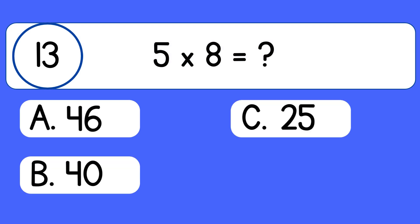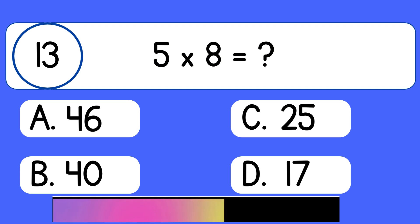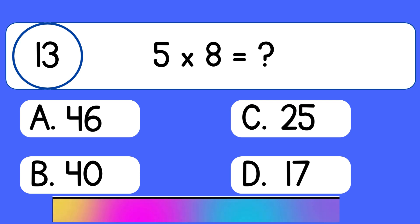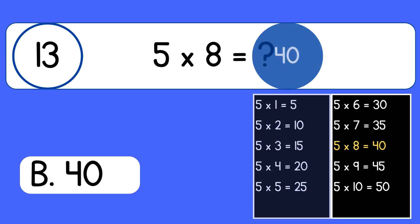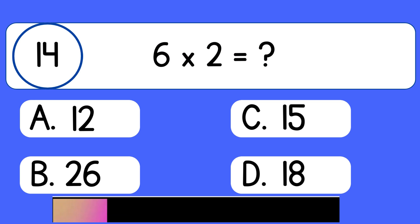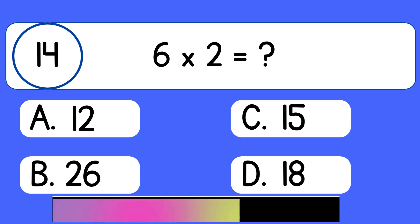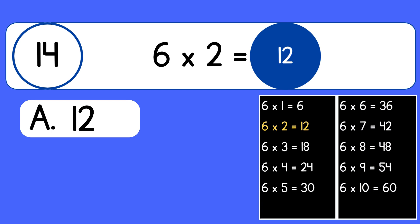Five times eight. Five times eight equals forty. Six times two. Six times two equals twelve.